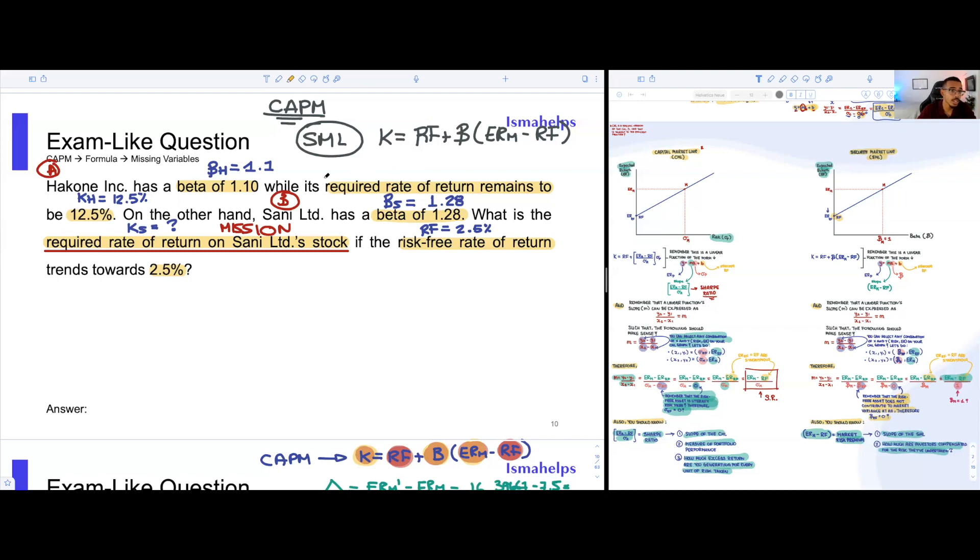Under CAPM, there's really one formula that we care about, and it's going to be the one of the SML. That's the one that we care about. K equals the risk-free rate plus beta times (return on the market minus risk-free rate). We're going to highlight the stuff that we know we have onto this formula. We have the beta of Hakone, the required rate of return of Hakone, the beta of Sani, and the risk-free rate of return, which is 2.5%.